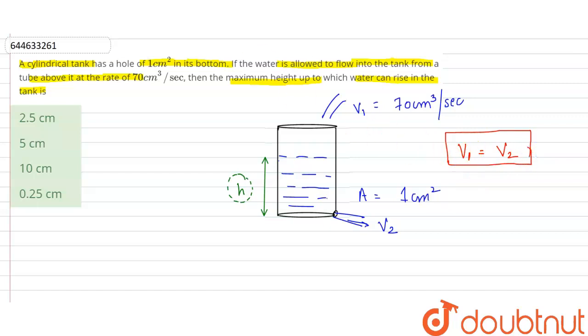Now, for calculating volume flow rate 2, this can be written as A into velocity, where A is the area of that hole and velocity is the velocity of water ejecting from here. By this method, we can write the formula for volume flow rate from the hole.